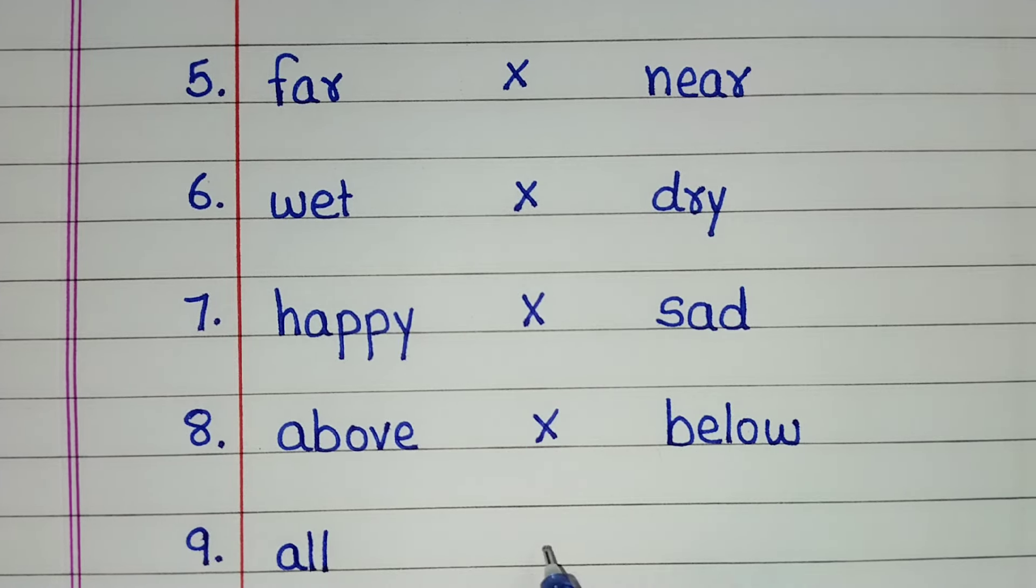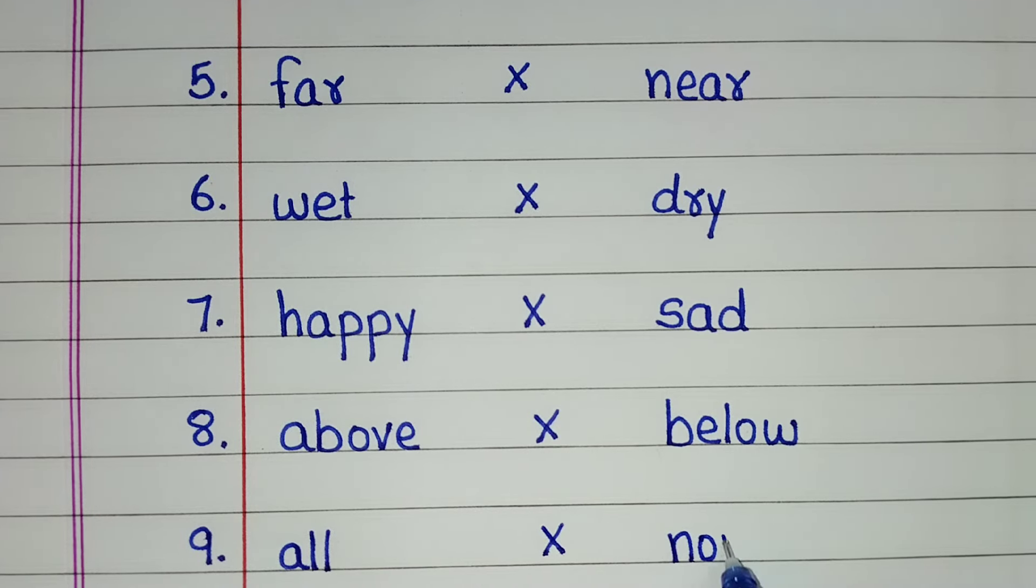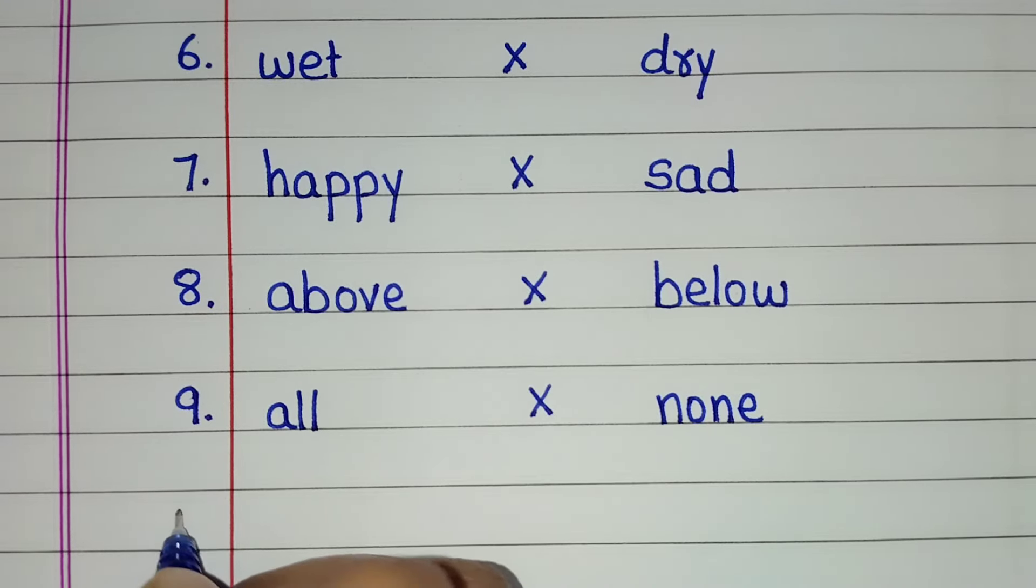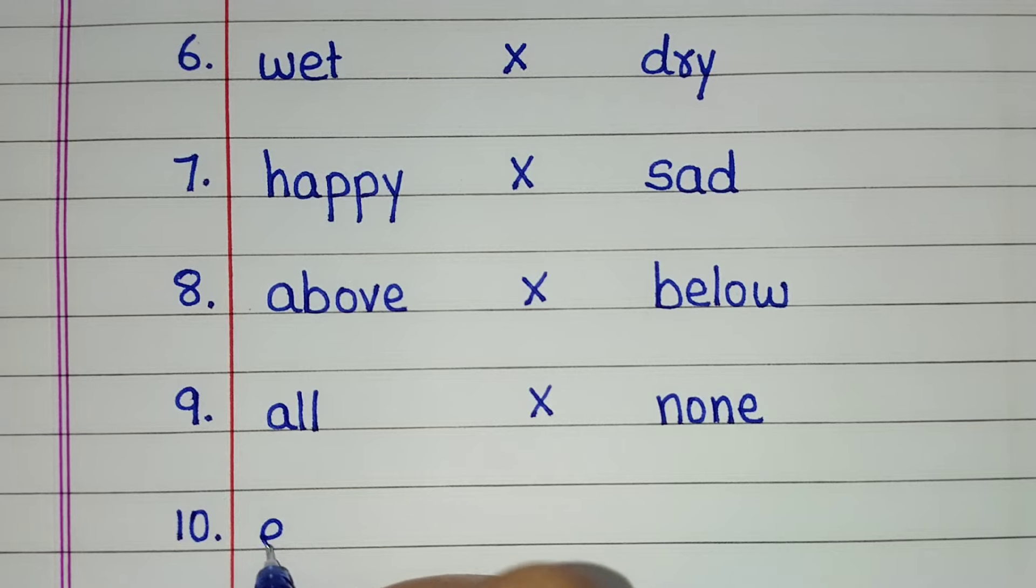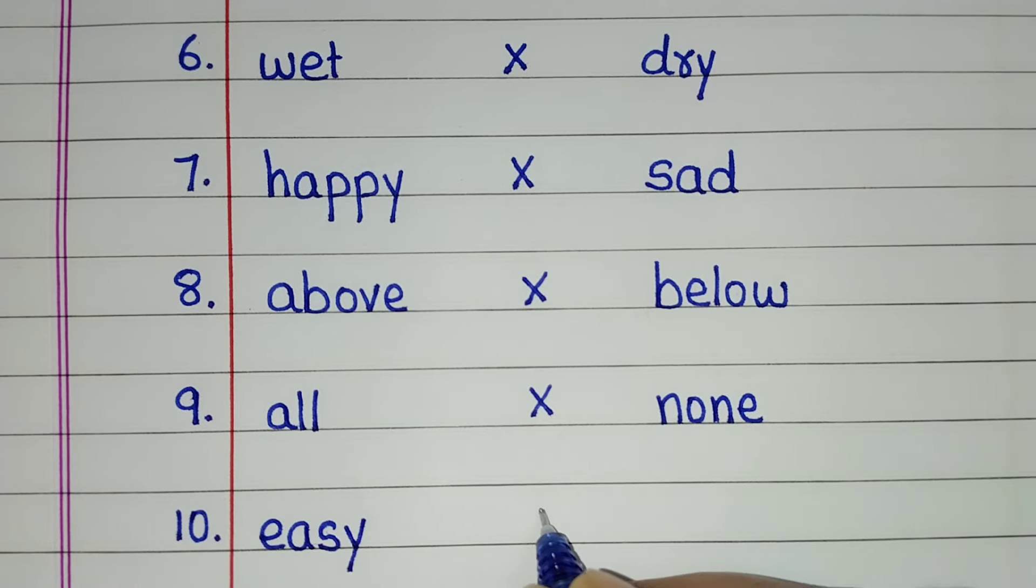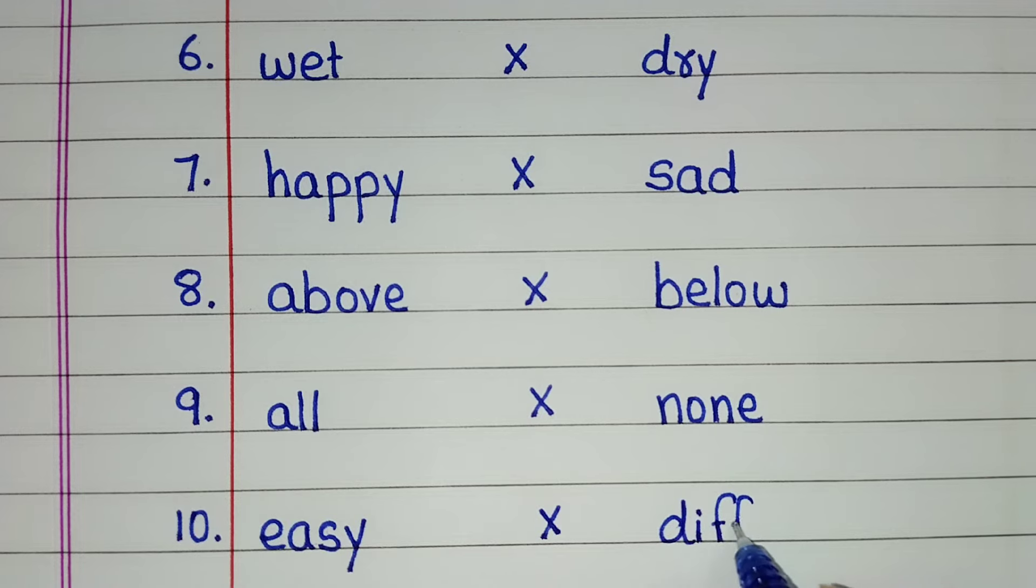All. Opposite of all is none. Easy. Opposite of easy is difficult.